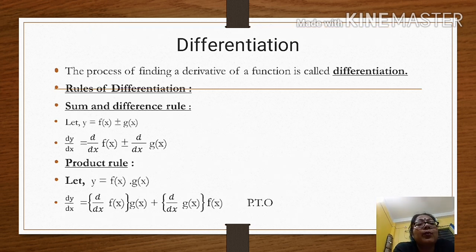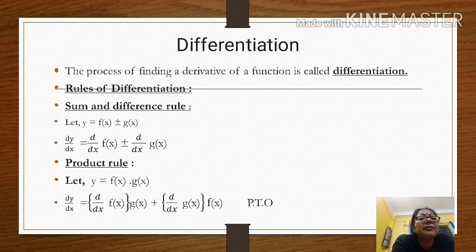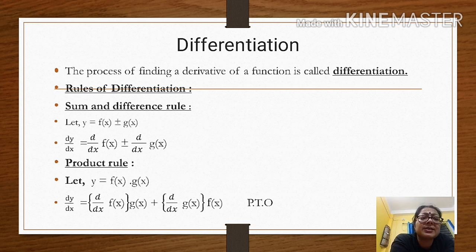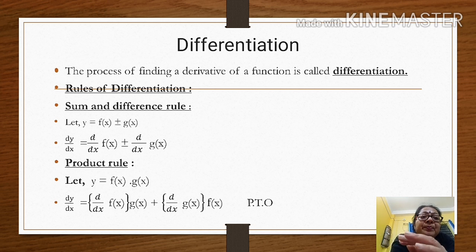Now what is differentiation? The process to find a derivative of a function is called differentiation. The first rule is the sum and difference rule. Suppose y is equal to f(x) plus g(x) or f(x) minus g(x). Then its derivative dy/dx will be d/dx of f(x) plus d/dx of g(x), or in the case of minus, derivative of f(x) minus derivative of g(x).